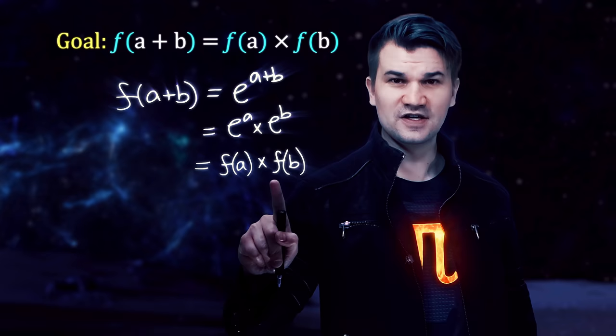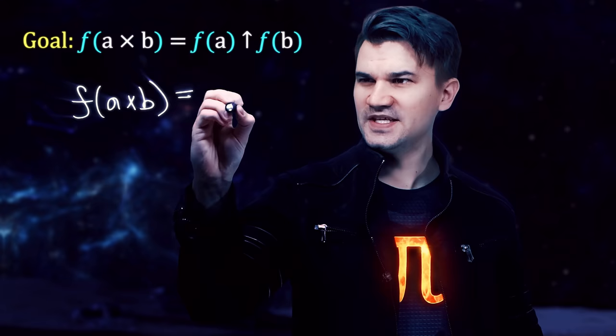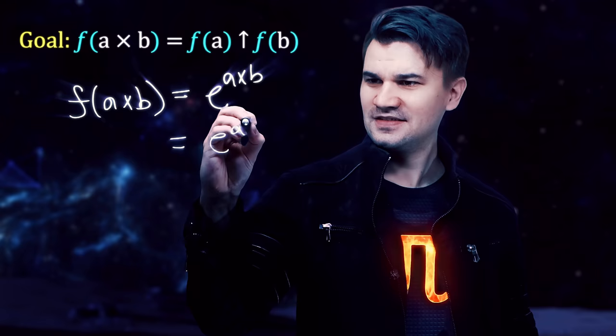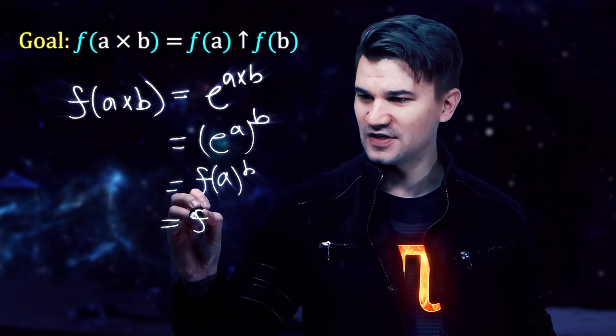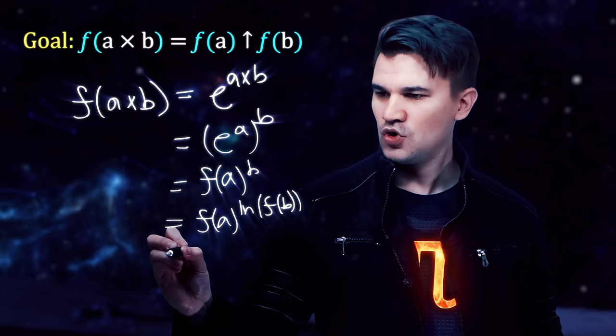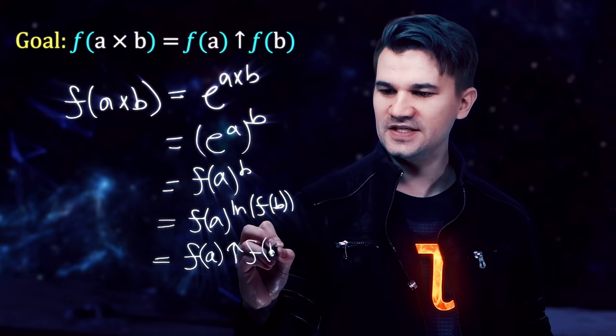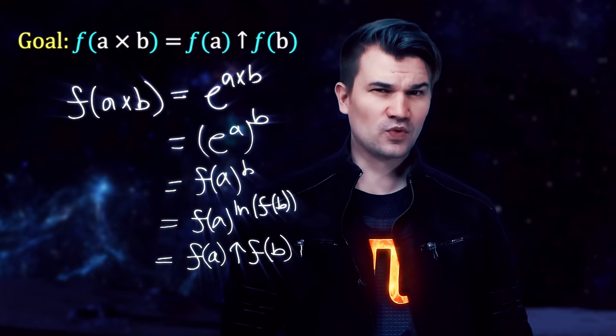Next up, multiplication. Does E to the X preserve multiplication? Let's find out. F of A times B is E to the A times B, which is E to the A to the B, which is F of A to the B. Now, remember, F of B is E to the B. So we could write this as F of A to the natural log of F of B, which is F of A power log F of B. So multiplication is also preserved, making E to the X a ring isomorphism.